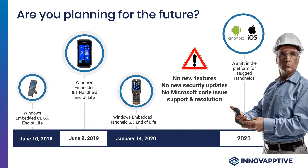The shift is happening from 2020 onwards. The push for warehousing and barcoding applications is going to be centered around the Android and iOS operating systems. The major device manufacturers in the market today — Honeywell, Zebra, and Cognex — are all accepting that change and moving towards it.